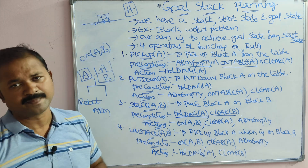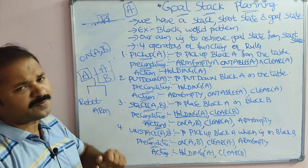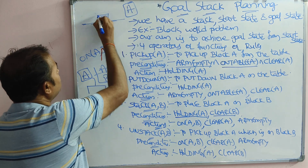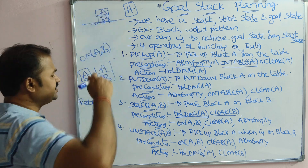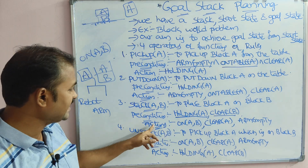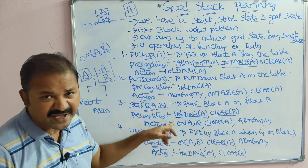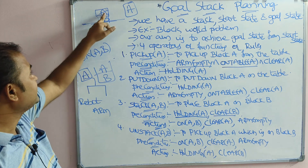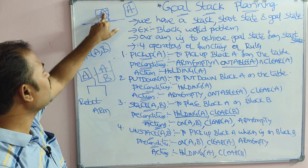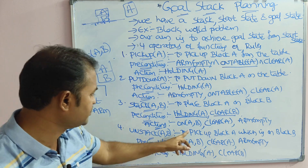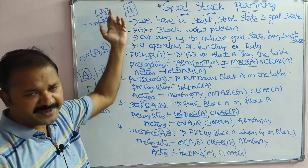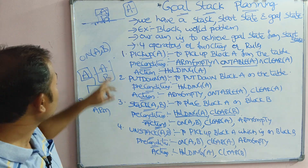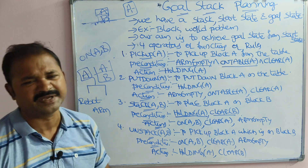We can also write ontable(B) as an additional precondition, meaning block B is on the table. The actions for stack(A, B) are: on(A, B) — block A is now on block B — clear(A) — on top of A there are no other blocks — and arm-empty, because the robot arm has placed block A and is now free.